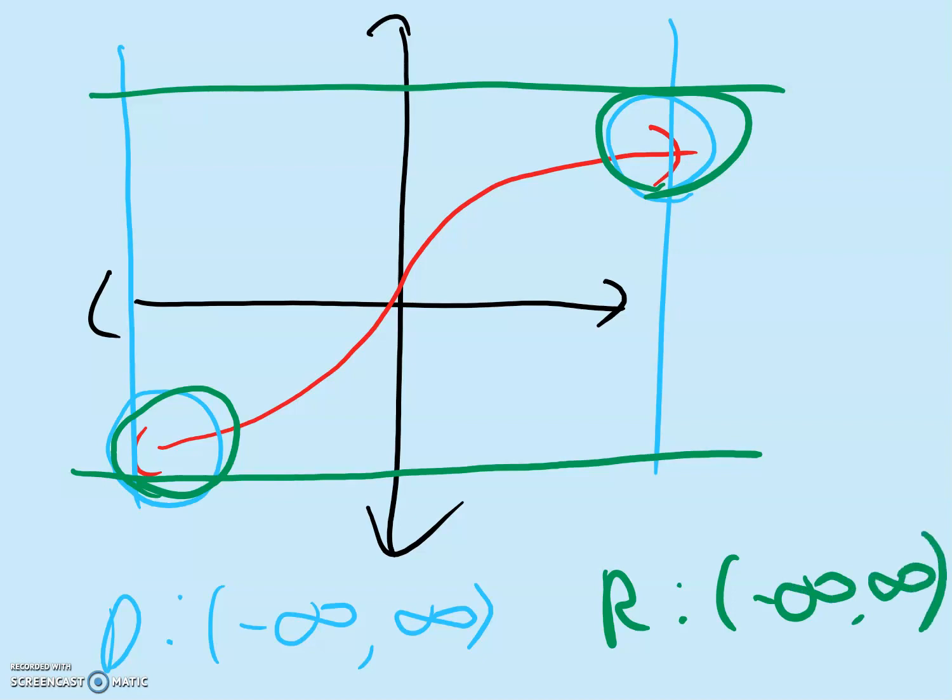To conclude, for both cubic functions and cube root functions, the domain and range will always be negative infinity to positive infinity. So if you see any graphs or equations that you recognize as a cubic function or a cube root function, and they ask you for domain and range, it will always be negative infinity to positive infinity.